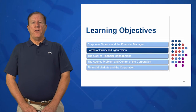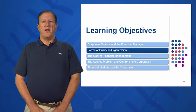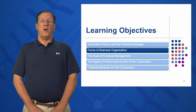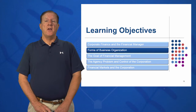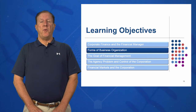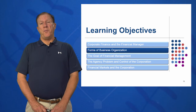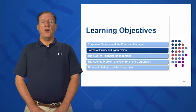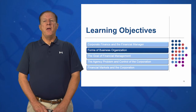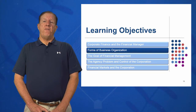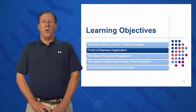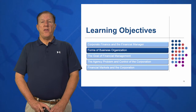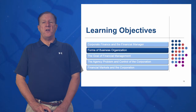The second learning objective we're going to focus on are the forms of business organization. What kind of business organization should I form when I start a new company, or maybe when I change my existing company? Should I form a sole proprietorship, a partnership — general or limited — or a corporation to protect myself liability-wise? These are the things we're going to discuss under forms of business organization.